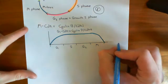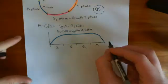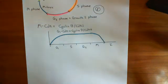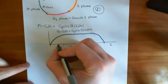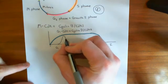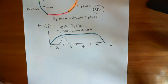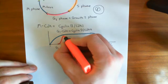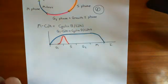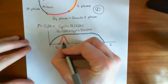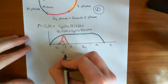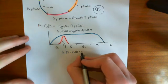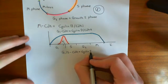The G1-S CDK, or cyclin-E CDK2, spikes just at the G1-S checkpoint. It helps the G1 CDK level — the cyclin-D CDK4 — to go up by inhibiting the P27 protein. So this is our G1-S cyclin-dependent kinase, also known as cyclin-E CDK2.